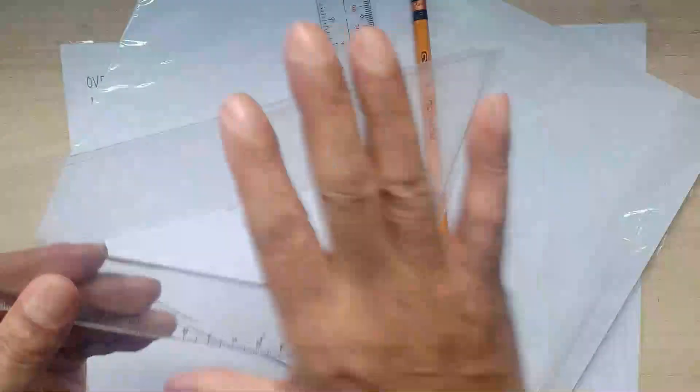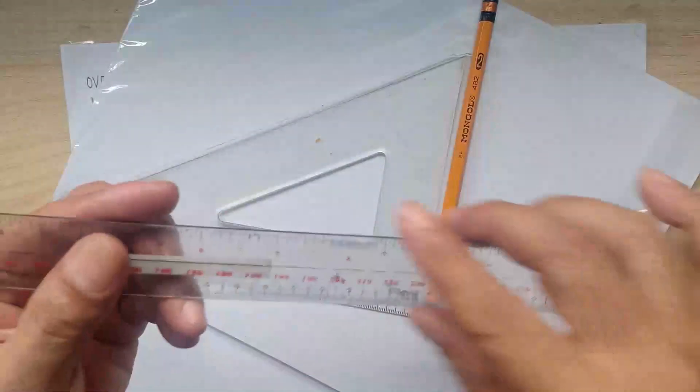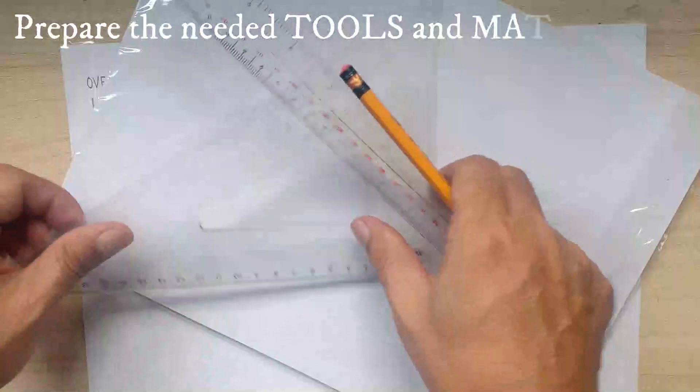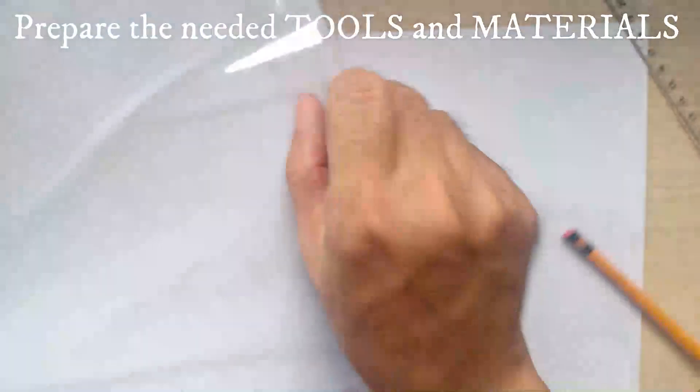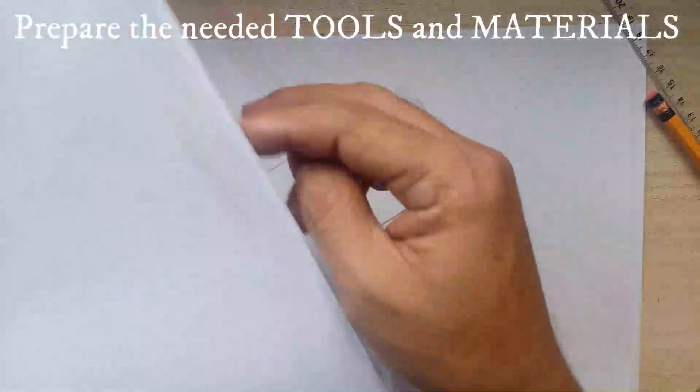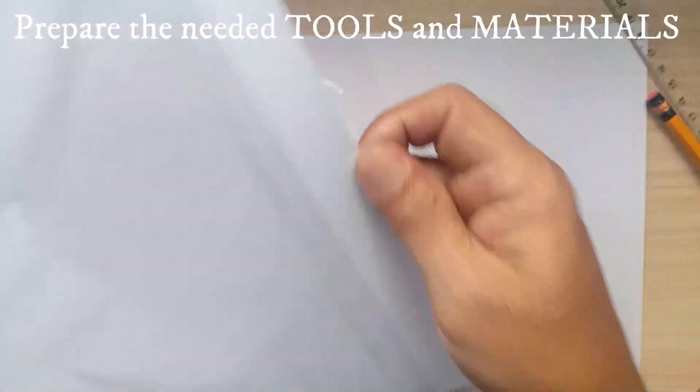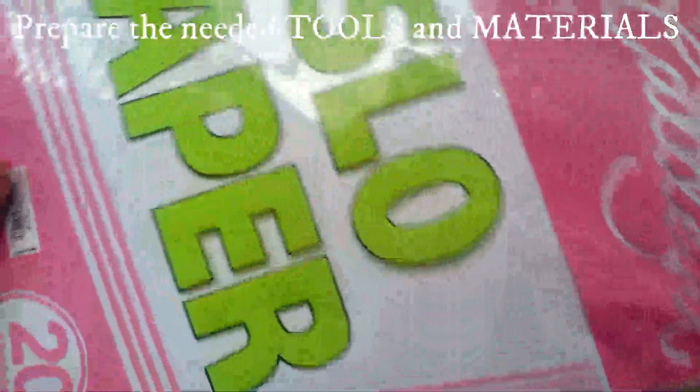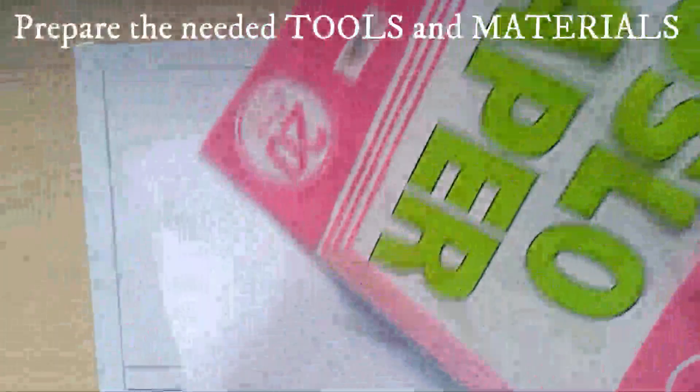You should have a 30 by 60 triangle, a ruler, and a pencil. You can use drawing paper or an Oslo paper or a drawing pad paper.